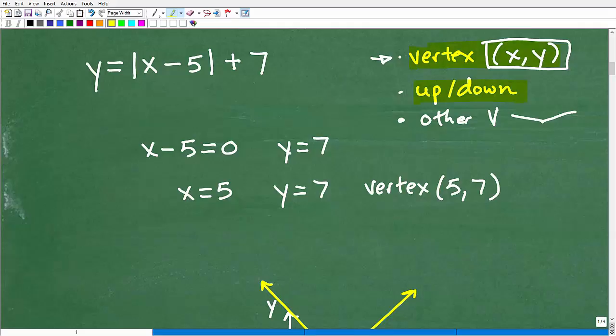How do we find the vertex? So remember, the vertex is an x, y point on the x, y plane. So I need to find the x, and I need to find a y. So how do we find x? Very simple. What you do is you take the stuff inside the absolute value, that expression there. We set it equal to 0 and solve for x. So x minus 5, we set that equal to 0. So x equals 5. Well, that is my x coordinate for my vertex. Super easy.